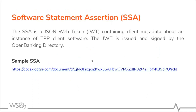A software statement assertion is a JSON web token containing client metadata about an instance of the TPP client software. The JWT is issued and signed by the Open Banking Directory. The payload of an Open Banking SSA must be a compliant software statement according to RFC 7591, and must also be a compliant JWT according to RFC 7519.